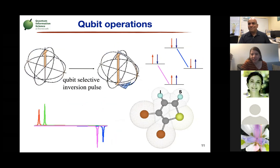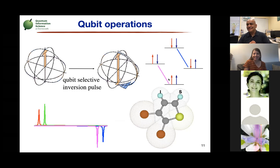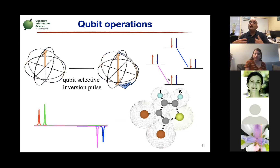Someone was asking what J is in the Hamiltonian equation. J is the strength of the coupling — the two spins are both magnetic moments and they interact through a bond, so J represents that interaction strength. It's one of the things that becomes really important for operating on multiple qubits, because you need a way for qubits to interact. The J term — the interaction between spins — is what allows you to make more complex two-qubit gates.